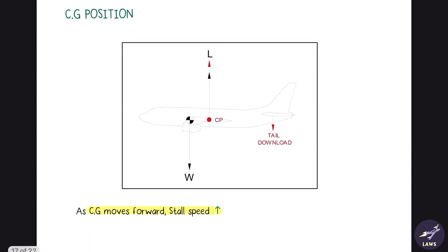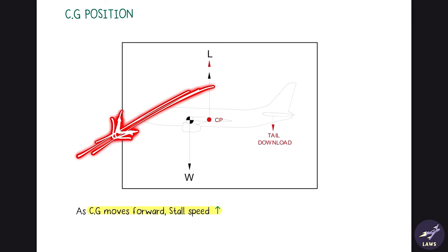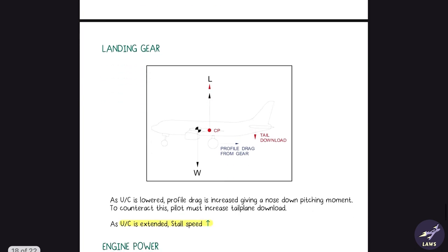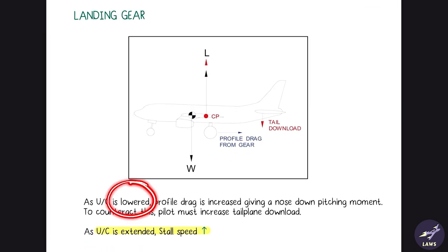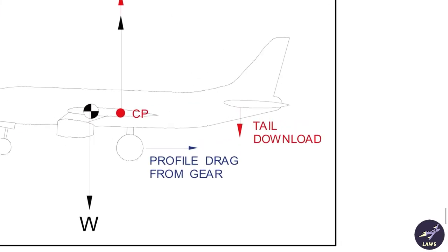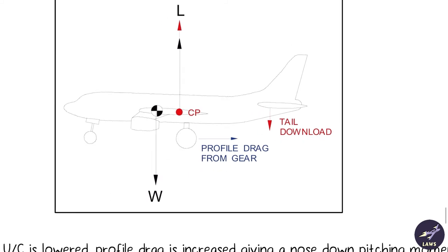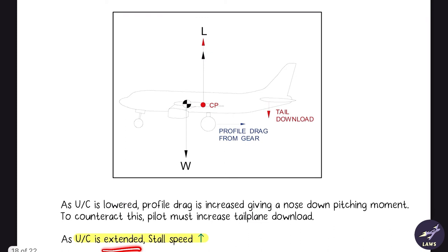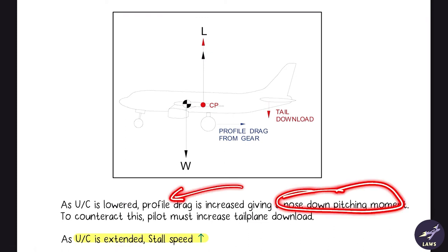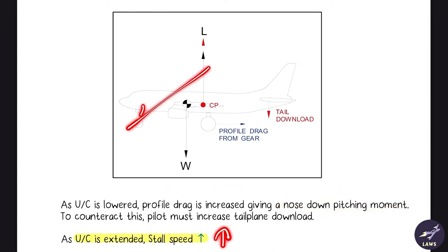CG position: as CG moves forward, there is a natural nose-down pitching tendency, which will increase stall speed. Landing gear: when the undercarriage is lowered, profile drag increases, giving a nose-down pitching moment. To counteract this, the pilot must increase tailplane download. In modern airliners, the whole horizontal stabilizer can move up and down. Due to this nose-down pitching moment from the undercarriage, stall speed increases.